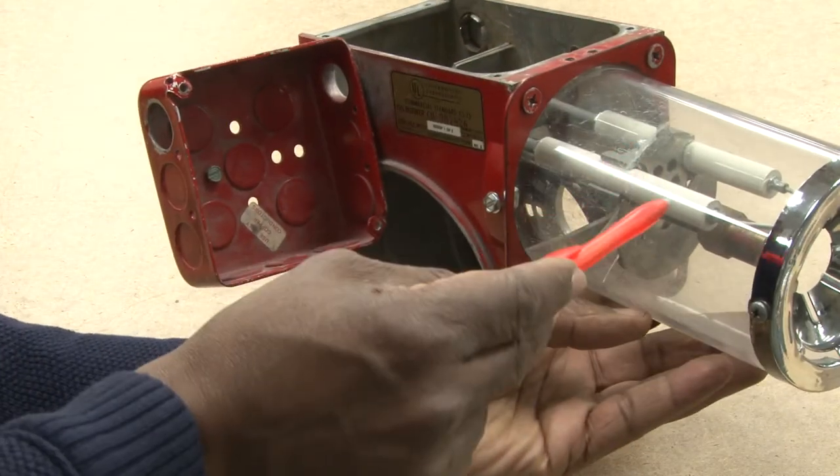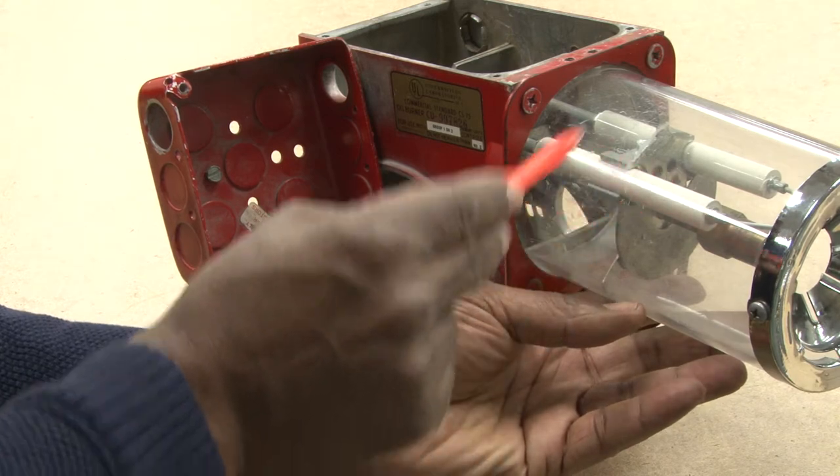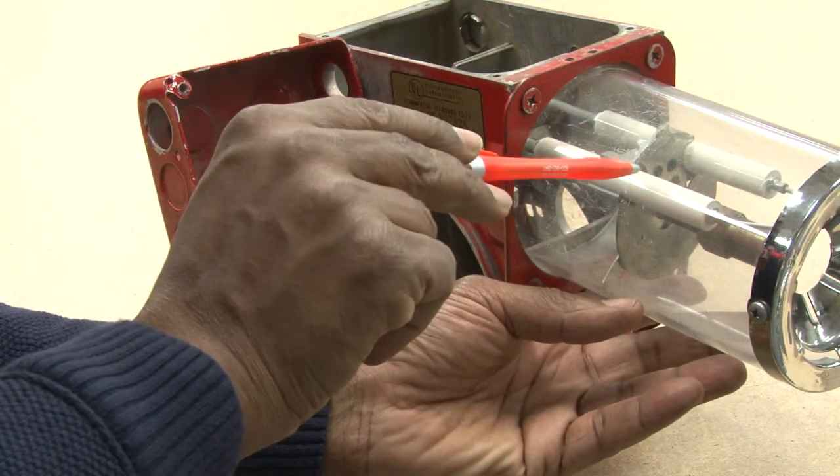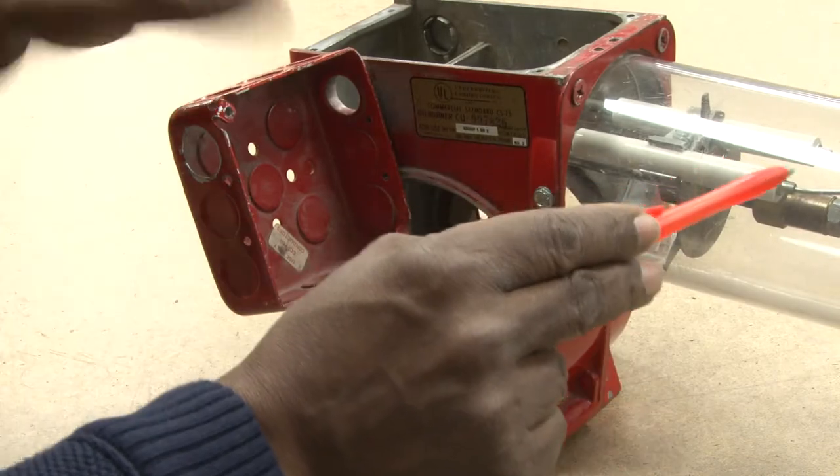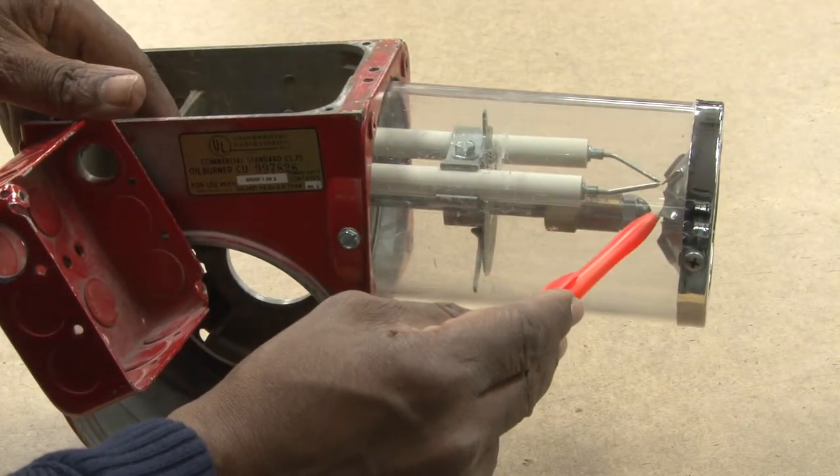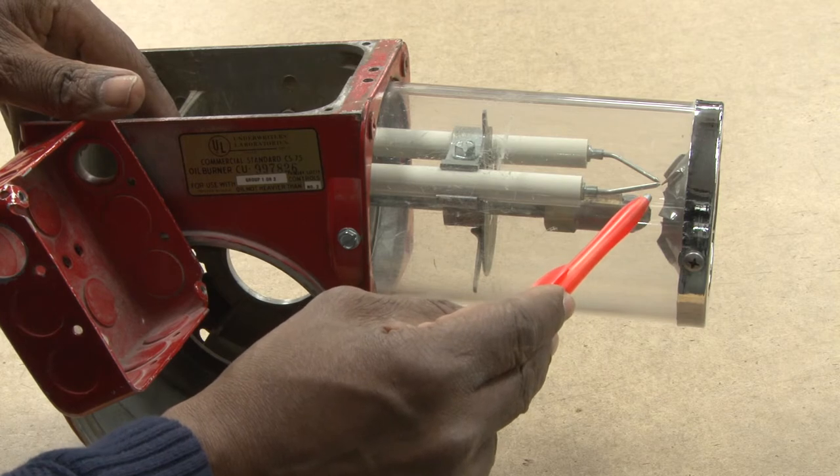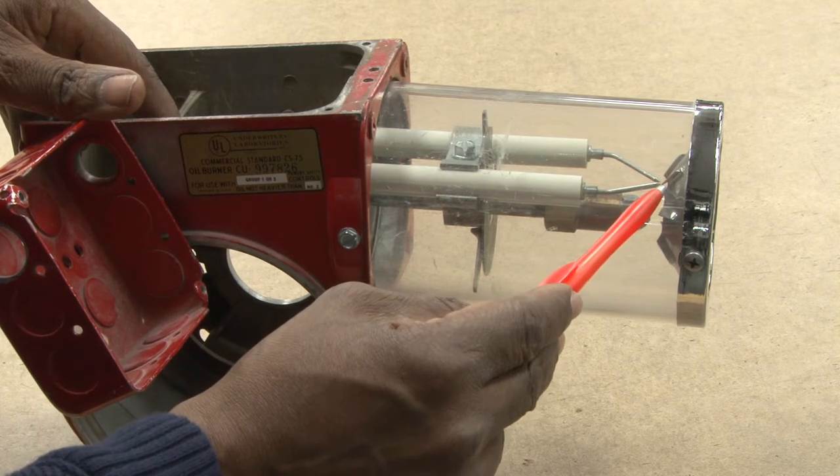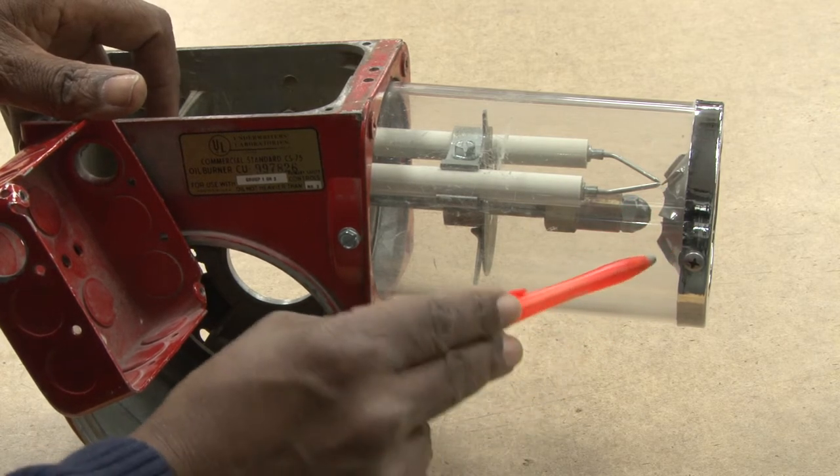So again you can see the ceramic insulating the high voltage electrodes at the tip that is very close together. That will make a very strong spark to light the oil, and oil is sprayed just below it.